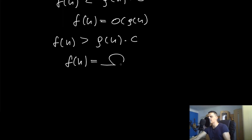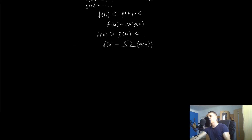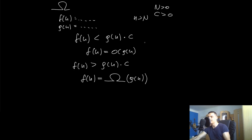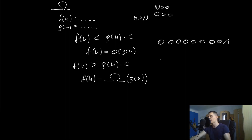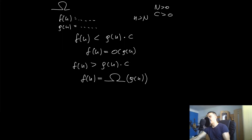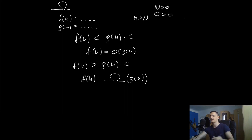This means f(n) is in Omega of g(n). If you can find any c — even something like 0.000000001, just not negative or zero — a constant you multiply with the right-side expression, and you can find a starting index uppercase N such that for all n from that index to infinity the inequality is true, then you can say it's in Omega of g(n). It's the same thing as Big O notation just the other way around.